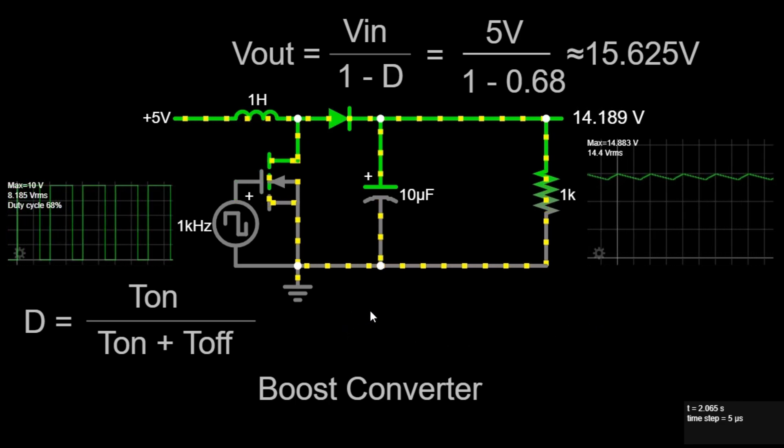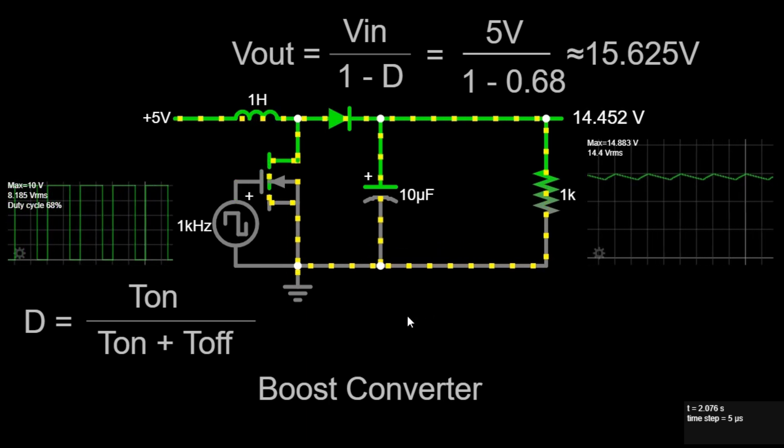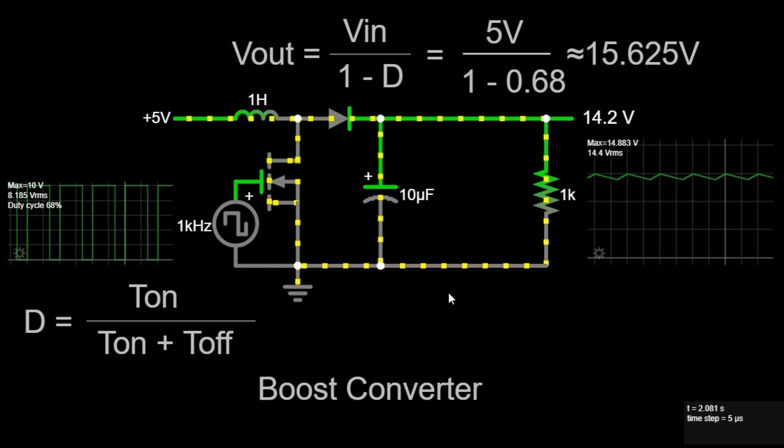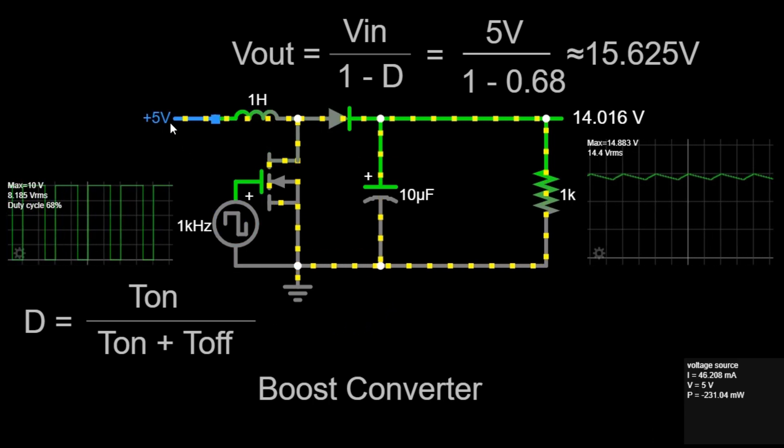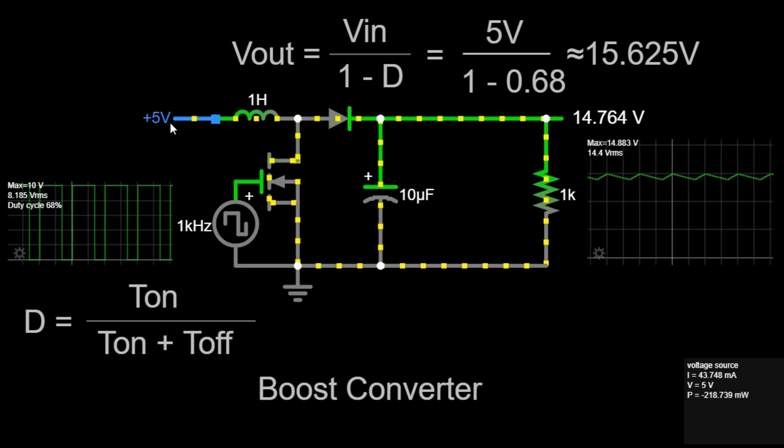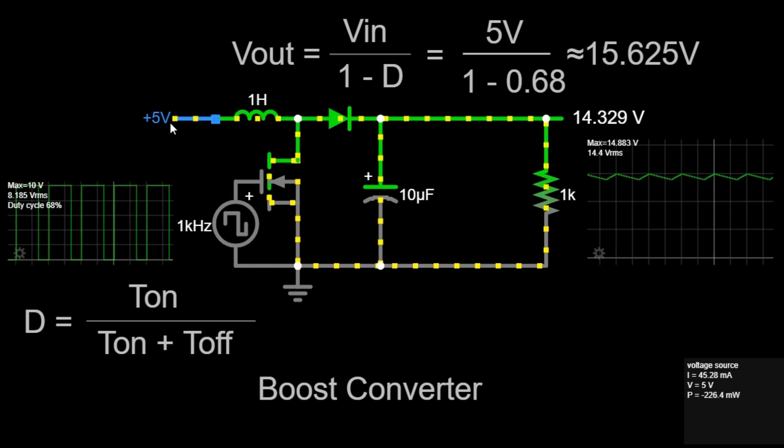Now, let's move on to identifying the basic components of a Boost Converter, which you can see in the provided circuit diagram. First, we have the input voltage source. This is the starting point of the circuit. In our example, the input voltage is plus 5 volts DC.